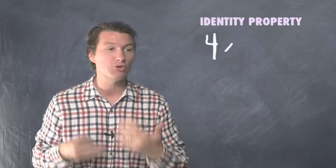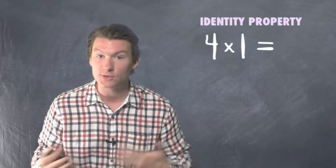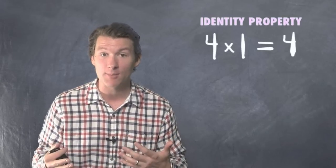Similarly, if you have some number and you multiply it by one, you've still got that same number because that's the identity property of multiplication. That's it. Let me just show you with a quick example.